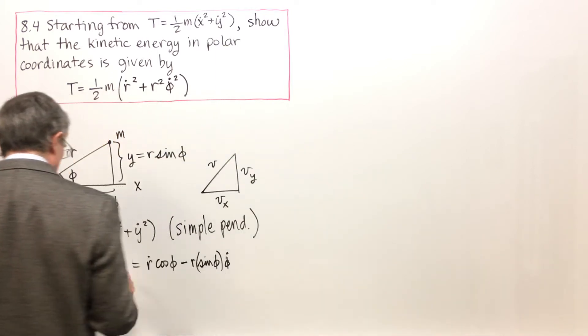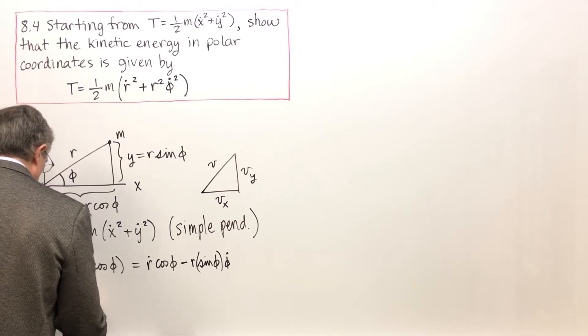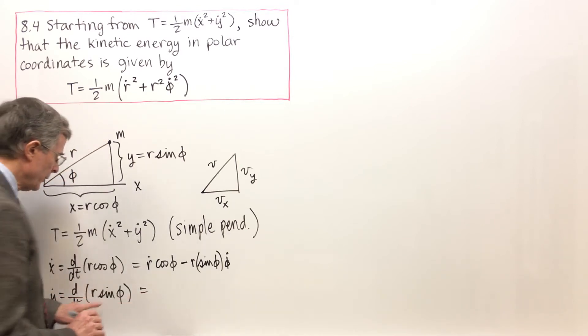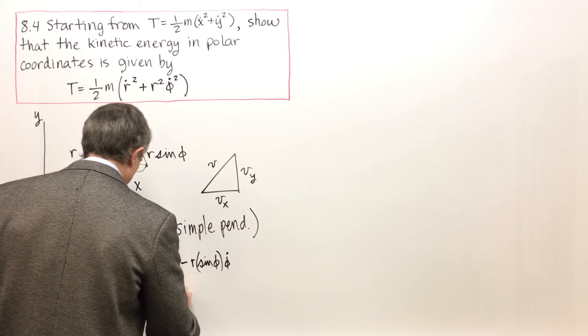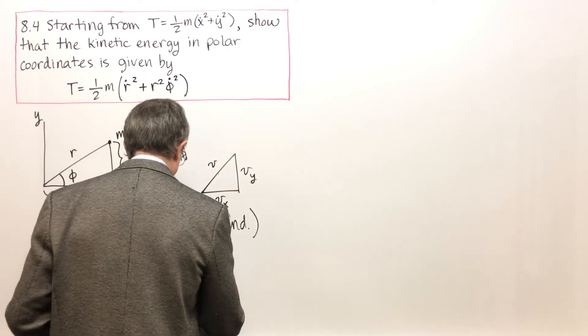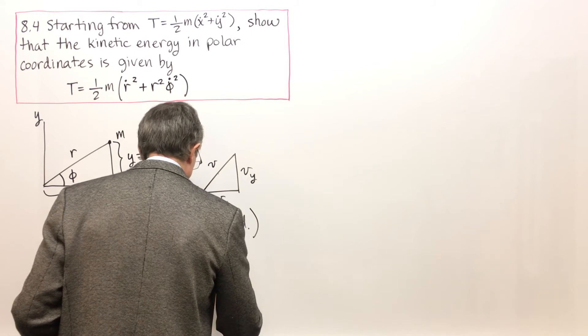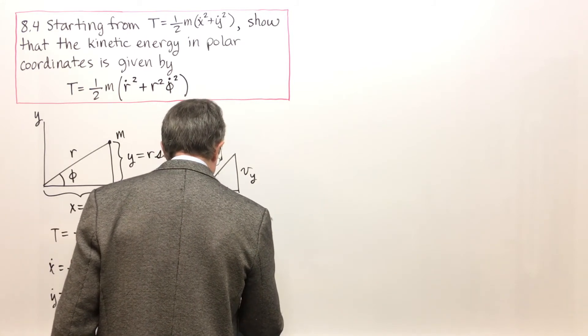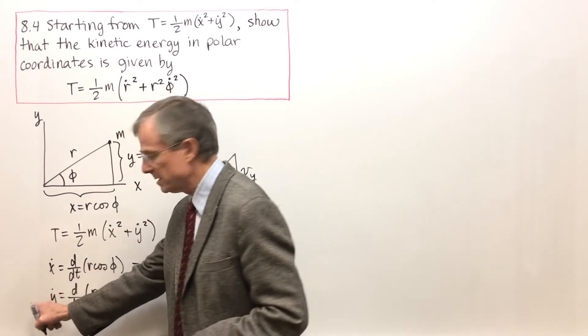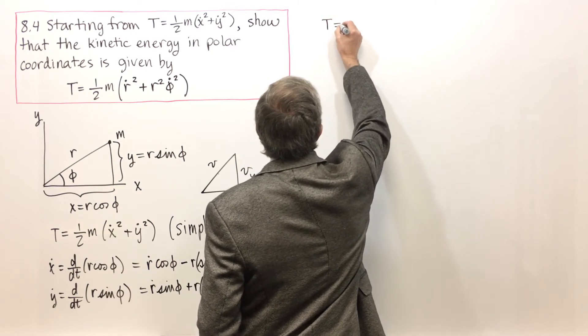That's x dot using implicit differentiation. Y dot is dy/dt of r sine phi. Derivative of the first times the second will be r dot sine phi, then the first times the derivative of the second will give me r times the derivative of the sine is the cosine, times the derivative of the inside is phi dot. There's x dot and y dot. Now all we have to do is substitute this and this into this, and we're done. This is where the fun begins.